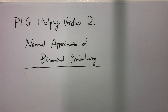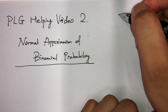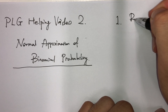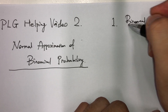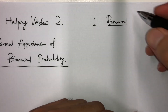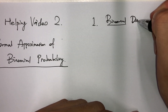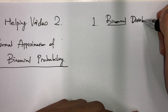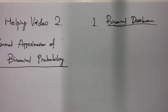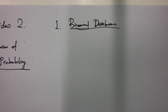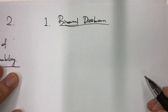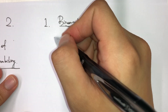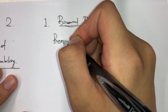Okay, if you are ready let's start from the first one: binomial distribution. Well, what is binomial distribution? The key thing about binomial distribution is that it is derived from what we call a Bernoulli experiment.